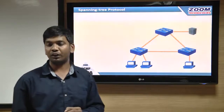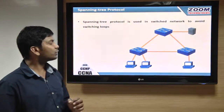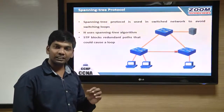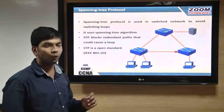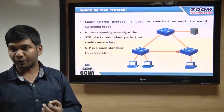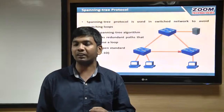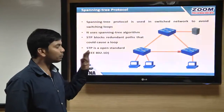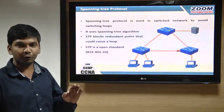To avoid this type of problem, we have spanning tree protocol in the switches, which blocks the redundant path that is causing the loop. This is an open standard introduced by IEEE; the code for this is 802.1D. I am going to explain how STP uses this algorithm to block the redundant path causing the loop, and analyze the spanning tree algorithm — how it works and which port on which switch will be blocked.